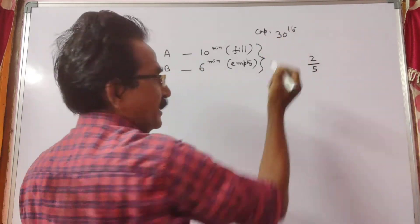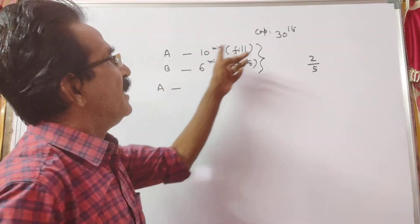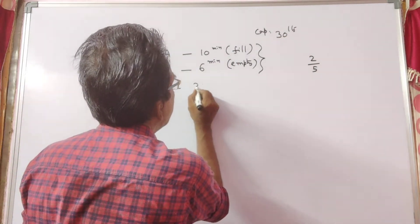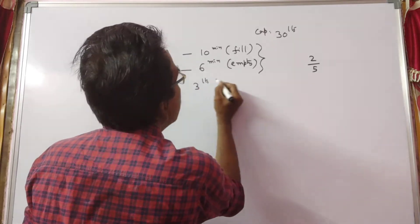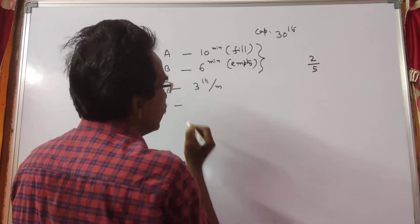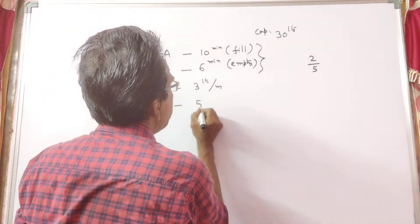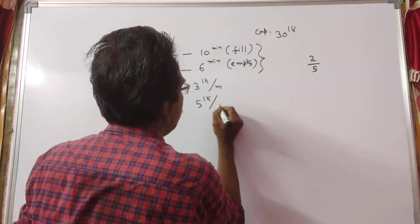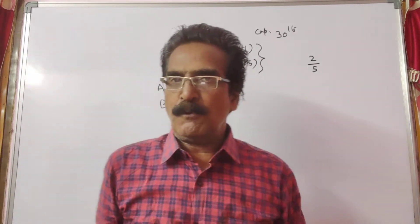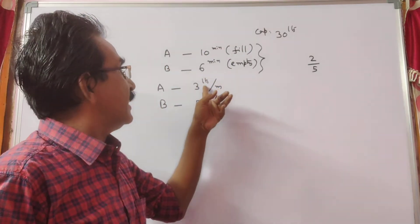Pipe A can fill 30 divided by 10, that is 3 liters per minute. Pipe B can empty 30 divided by 6, that is 5 liters per minute. If these two pipes are opened, what is the net result? Plus 3 minus 5.